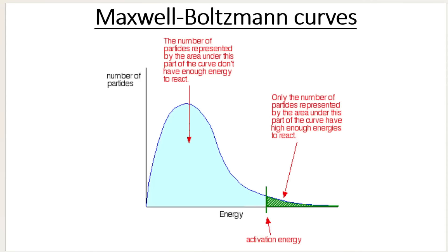What two scientists did is they represented this visually on the Maxwell-Boltzmann distribution curve. They plotted kinetic energy on the x-axis, and the y-axis represents the number of molecules or particles for a given gas sample at a specific temperature. So this curve represents the energy of all the different particles at a given set temperature.